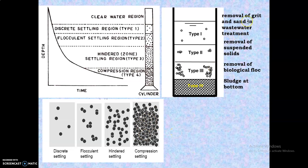Examples of the settling types: discrete settling is applicable for removal of grit or sand in wastewater treatment. Removal of suspended solids in the secondary clarifier comes under flocculent settling. Removal of biological floc in the secondary treatment of wastewater comes under hindered settling. Whatever sludge collects at the bottom of the tank comes under compression settling.